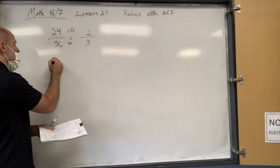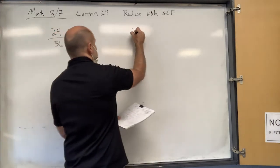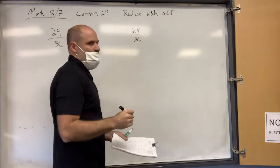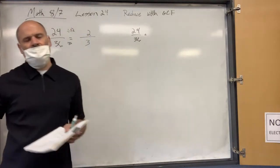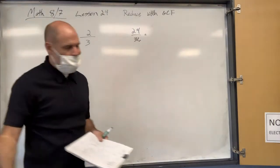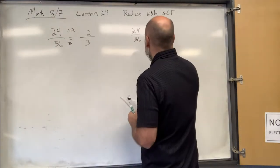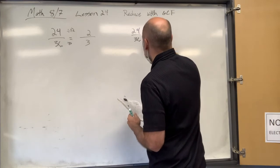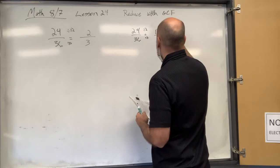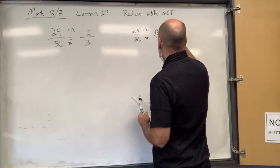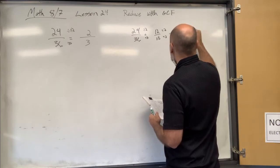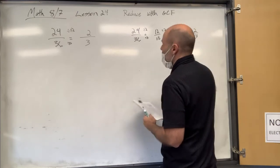Did anyone do it a different way? Grace just kept splitting the two numbers — keep cutting in half. You get 12/18ths, then keep going to 6/9ths, and then three goes into both, three times each, and you got there.